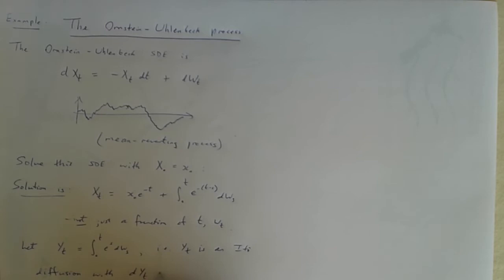With here comes its description: dyt is e to the t dwt. That is its drift is 0 and its speed is e to the t.